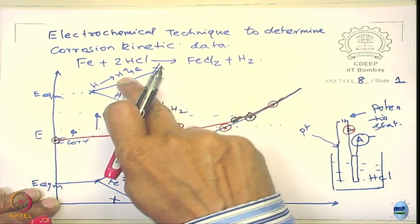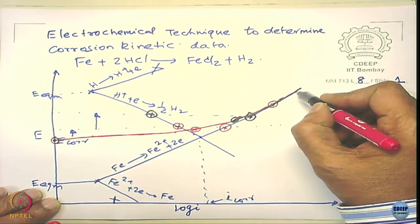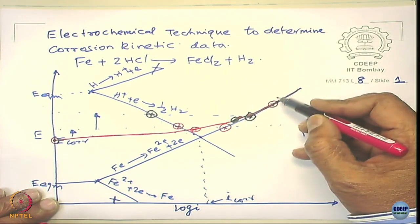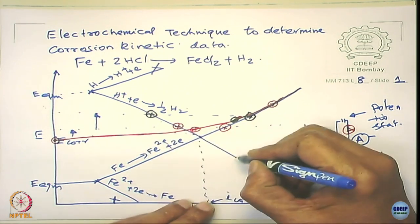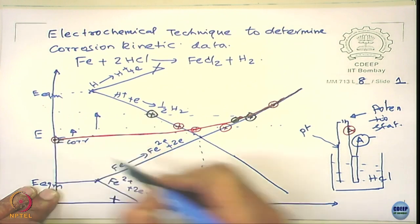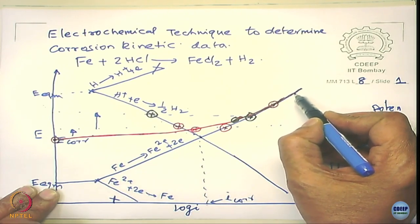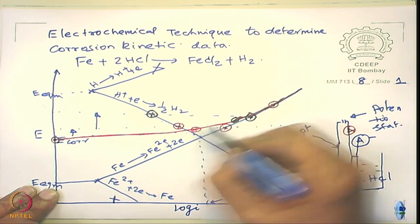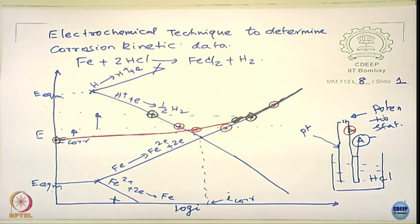Agreed? Any questions? Now what happens when I decrease the potential? When I bring it down, let us say to below E_corr, the anodic reaction rate is less and the cathodic reaction rate is more. There is a net current, and it will lie along the cathodic Tafel line. So I would obtain points lying along this cathodic branch.